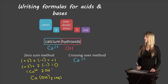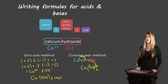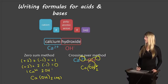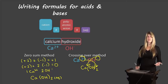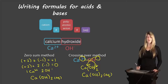We can also use the crossing over method. We write all symbols next to each other, use the charge on calcium (2+) as the subscript for the hydroxide — so we write 2 there and know we need brackets around the hydroxide — then use the charge on hydroxide (1−) as the subscript for calcium. We don't write subscript 1, so we leave it as is. We end up with Ca(OH)₂, then write our subscript (aq).